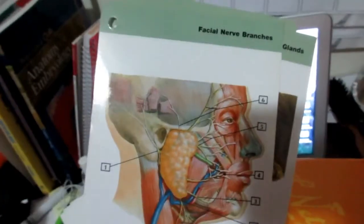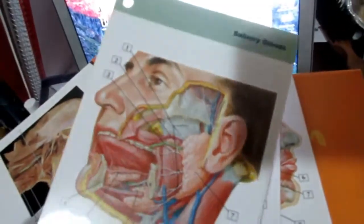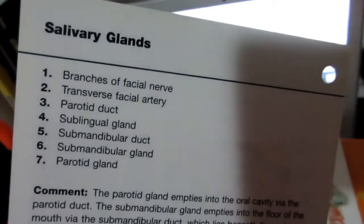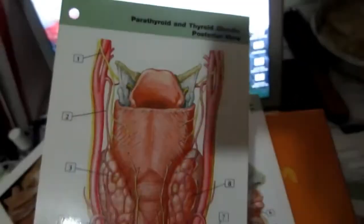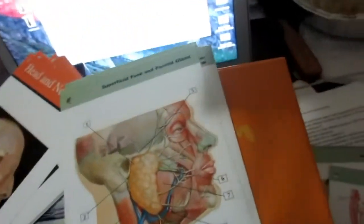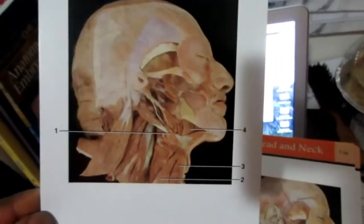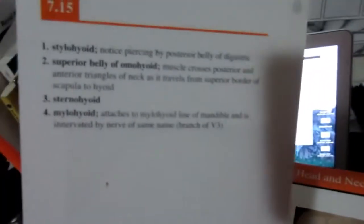And then the Rohen's has the real-life pictures. They're like plastinated models of cadavers, and I'll show you guys. This is an example of the Netter's flashcards. Another one. And then flip it over and the number just corresponds with the numbers in the flashcard. And then the Rohen's flashcards have actual plastinated models.